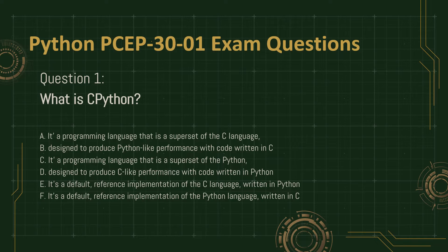A. It is a programming language that is a superset of the C language. B. Designed to produce Python-like performance with code written in C. C. It is a programming language that is a superset of Python.